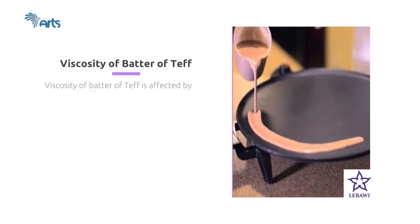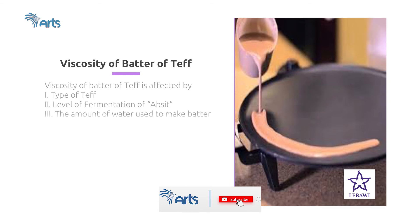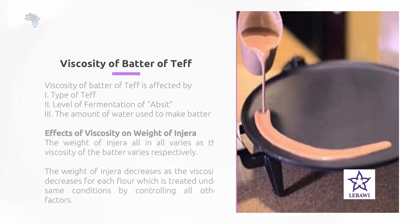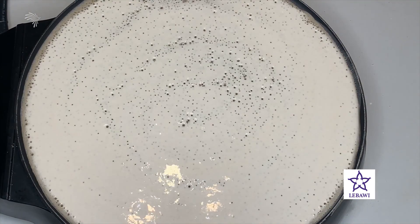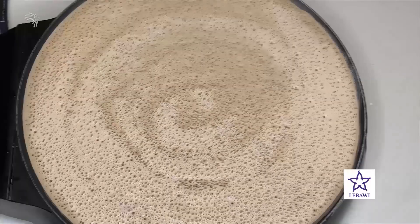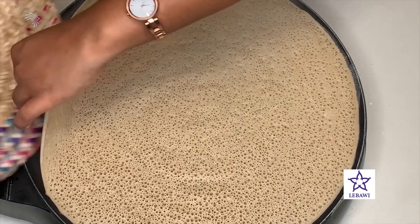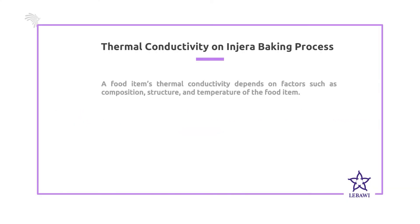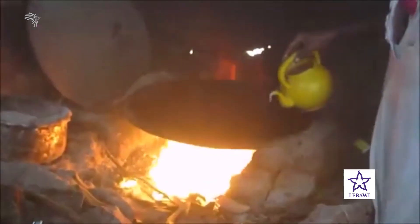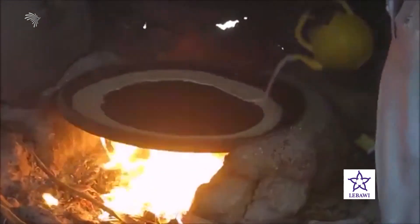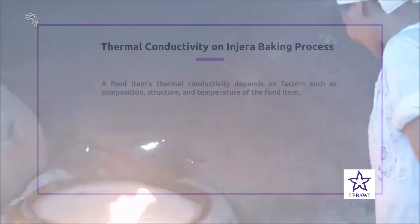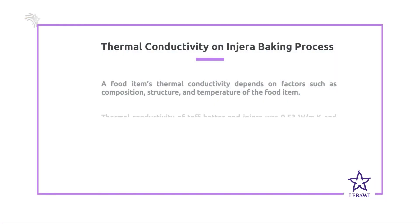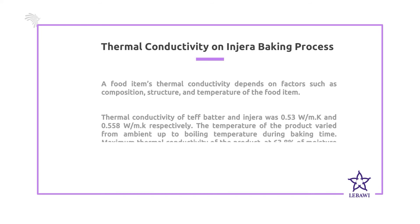The viscosity of teff batter is affected by the type of teff, level of fermentation of the teff seed, and the amount of water used to make the batter. The weight of injera is dependent on the viscosity of the teff batter — as the viscosity increases, the weight of injera will also increase. When it comes to thermal conductivity, heat transfers from the clay pan, called a metad, towards the teff batter, and the way that heat energy is transferred affects the texture of injera. The thermal conductivity of teff batter and injera are about 0.53 and 0.558 watts per meter Kelvin respectively.